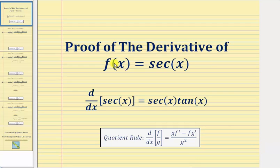Welcome to a proof that the derivative of secant x with respect to x is equal to secant x times tangent x.